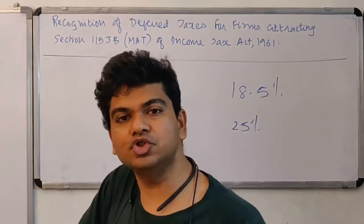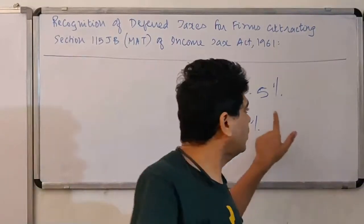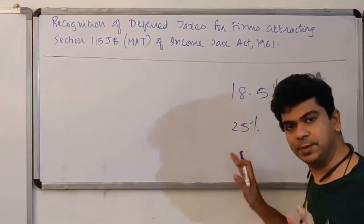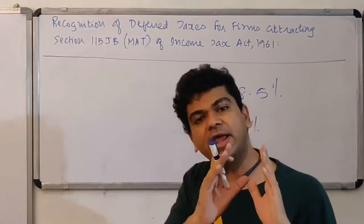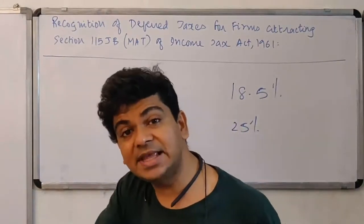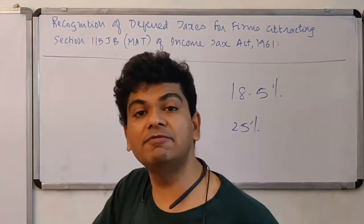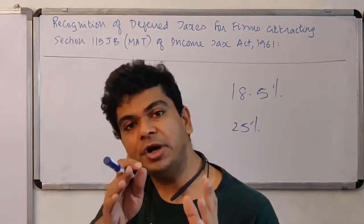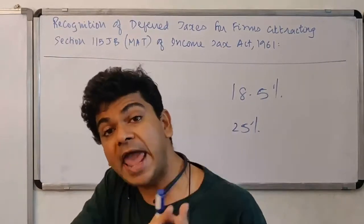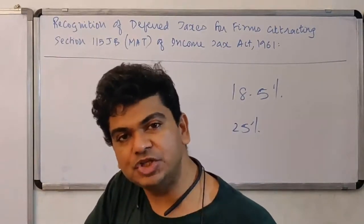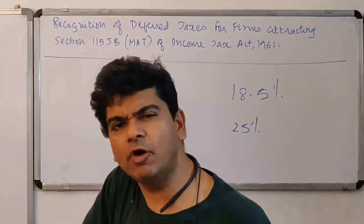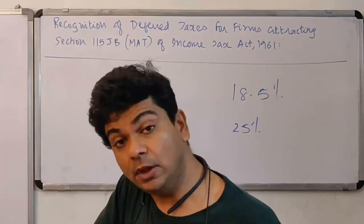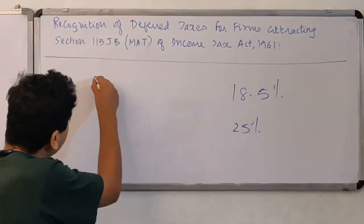AS-22 says that you should use the normal regular tax rate to measure deferred taxes. The rationale of Accounting Standard 22 is that attracting Section 115JB is a temporary phenomenon. Now you are not going to attract Section 115JB forever. So you may attract 115JB maybe for one year or maybe for a few years. After that, Section 115JB will no longer be applicable. So we want to ensure uniformity.